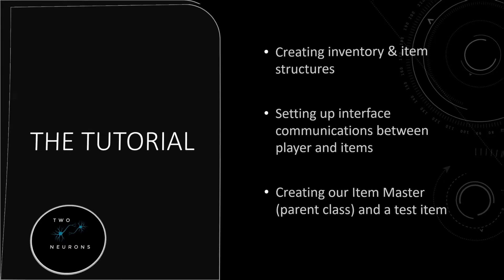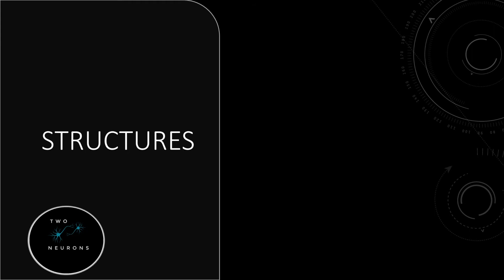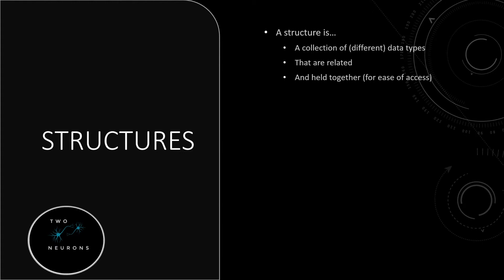First we'll start with structures. A structure is a collection of usually different data types. The ones we've worked with previously were all the same data type. They are related - so while there might be a bool, a float, and so on, the reason they're grouped together is their relation. We're going to have bools, text, a texture, and a whole bunch of different things in our structures. They are related because they define our item, and they are held together for ease of access. It also makes saving stuff down the road easier as well.